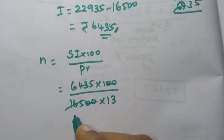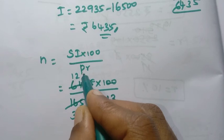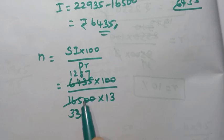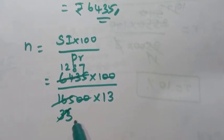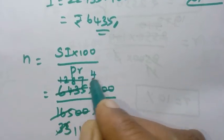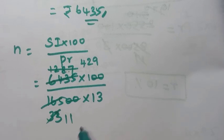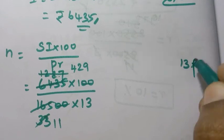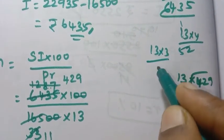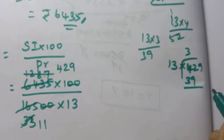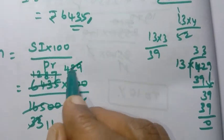Cancelling: 6,435 divided by 16,500 into 13. After simplification, the number of years N equals 3 years.